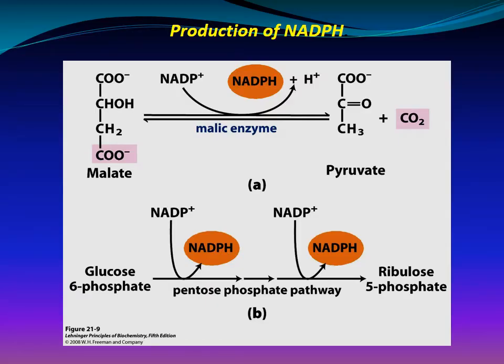Production of NADPH occurs via two routes. The first route is oxidation of malate to pyruvate by malic enzyme. The second route is the oxidative phase of the pentose phosphate pathway, which contributes the rest of the needed NADPH.